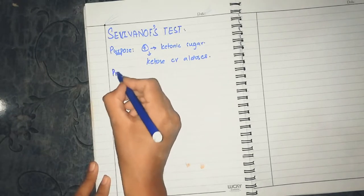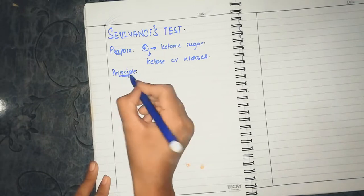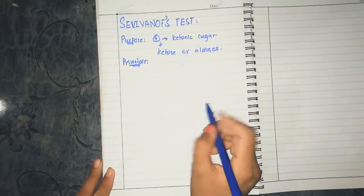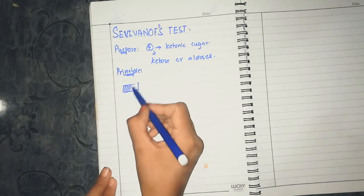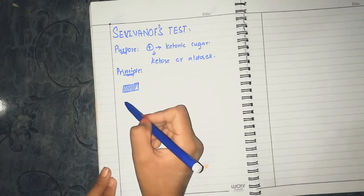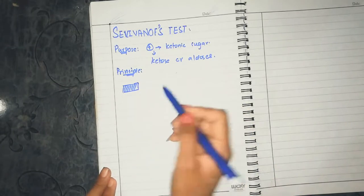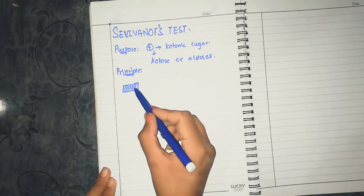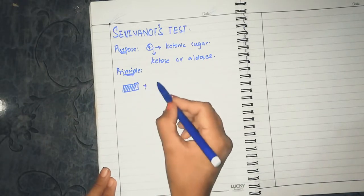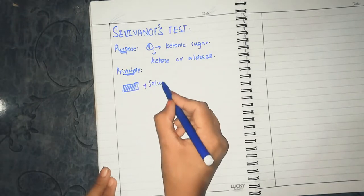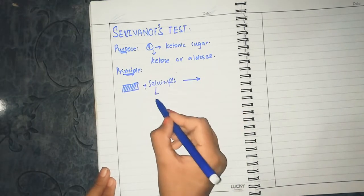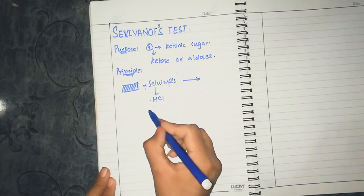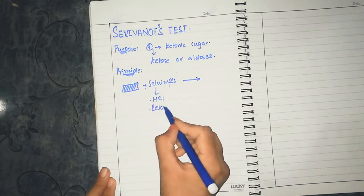The principle is very simple. We have a carbohydrate sample with ketonic or aldehyde group. We will add Selivanov's reagent, which contains two components: HCl and resorcinol.